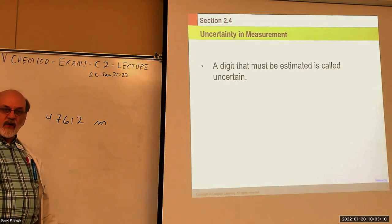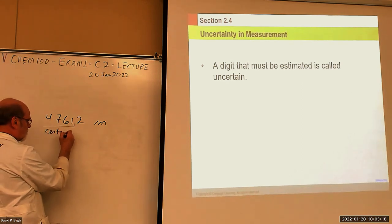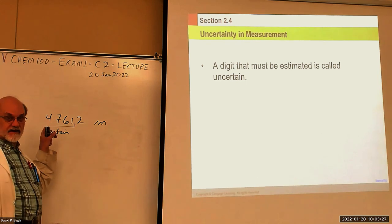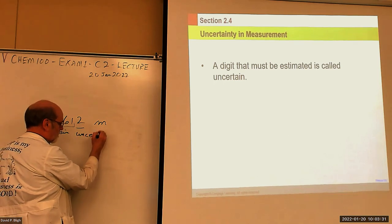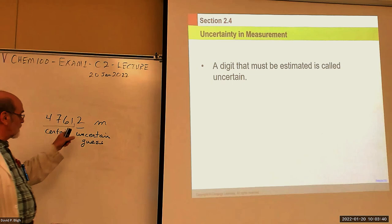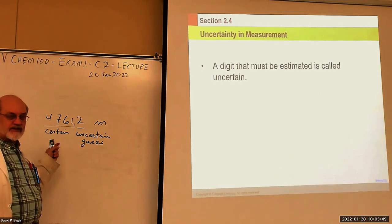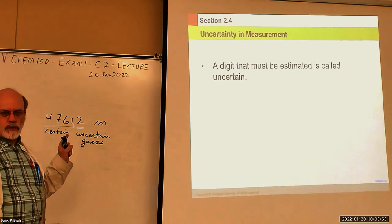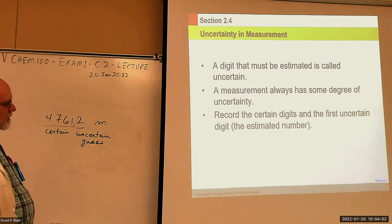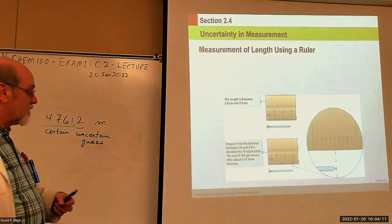Whenever a scientist sees one of your measurements — say, a number like 47612 meters — by convention they know instantly that these digits here are certain, chiseled in stone with no variability. The last digit is uncertain — another word for it is 'estimated.' So you're estimating the last digit of your number. When you make a measurement, you want to keep as many digits as you can honestly keep; don't throw anything away until you have to.